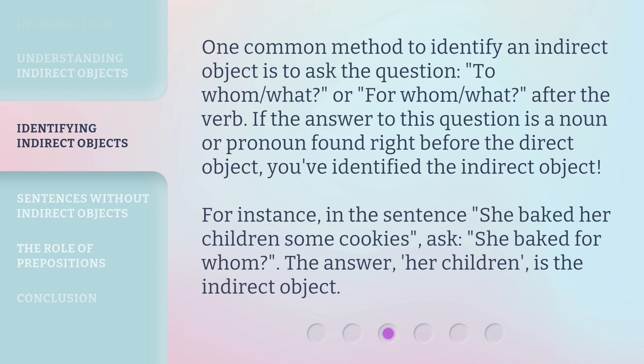One common method to identify an indirect object is to ask the question 'to whom' or 'for whom' after the verb. If the answer to this question is a noun or pronoun found right before the direct object, you've identified the indirect object. For instance, in the sentence 'she baked her children some cookies,' ask: she baked for whom? The answer, 'her children,' is the indirect object.